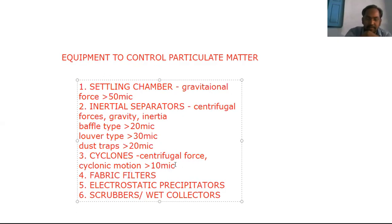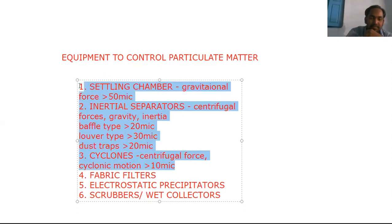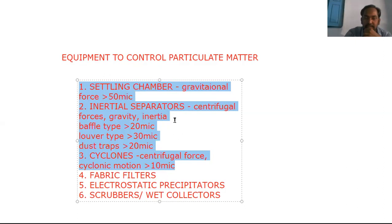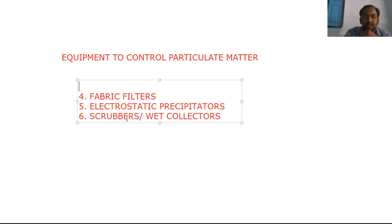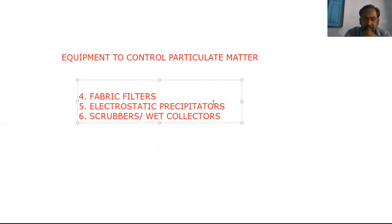We need to remember the forces and principles involved in the operation of these three equipment types, and the particle sizes they can separate — all covered in the previous session. In this session we are going to discuss the remaining three: fabric filters, electrostatic precipitators, and scrubbers.